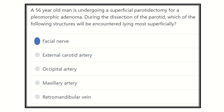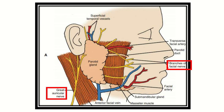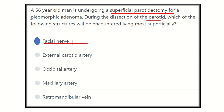Our final answer is the facial nerve, because it lies within the parotid gland substance, and during superficial parotidectomy for pleomorphic adenoma it may get damaged. However, if the great auricular nerve is present as an option, that would be the answer. Other options: the external carotid artery lies more medially; the occipital artery lies in the occipital region; the maxillary artery is not relevant here; and the retromandibular vein lies more deeply. So our answer is the facial nerve.